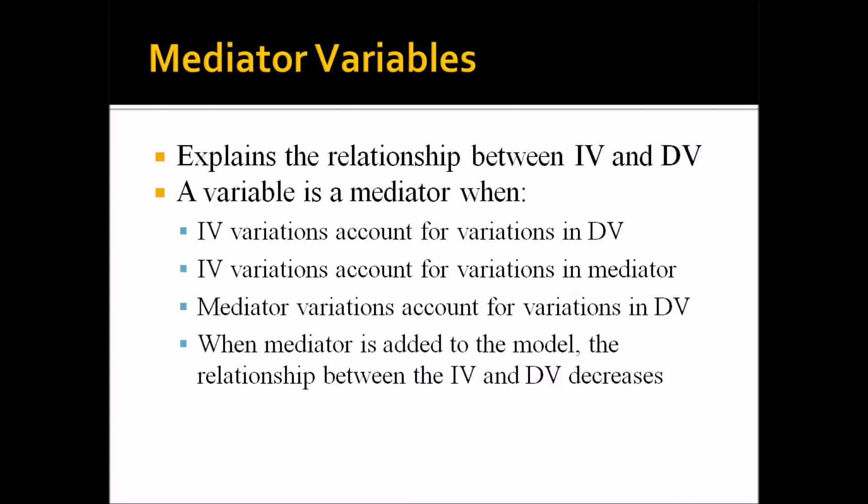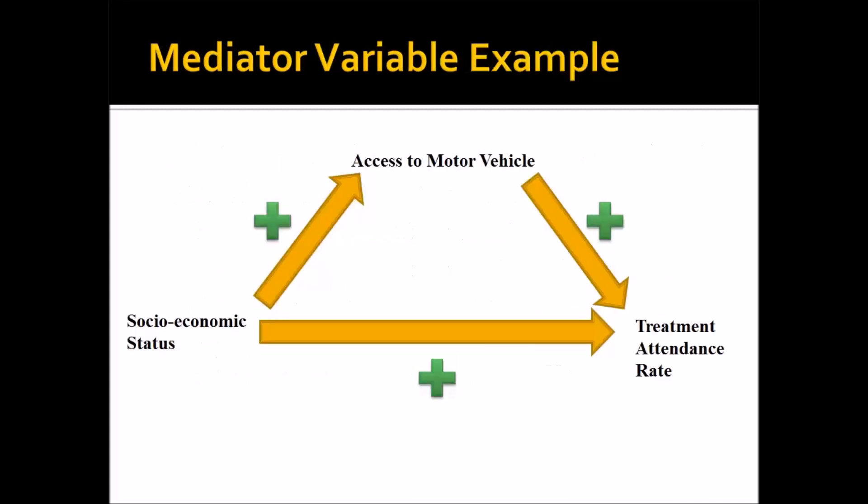Third, the presumed mediator's variations account for variations in the dependent variable — so there's a relationship between the mediator and the DV. Fourth, when the mediator is added into the model, such as a linear regression, the relationship between the independent variable and the dependent variable decreases, or in some cases is eliminated.